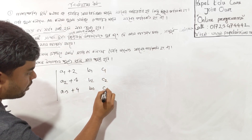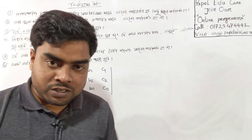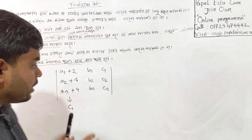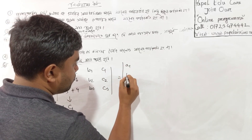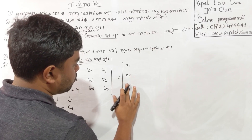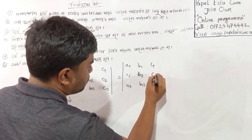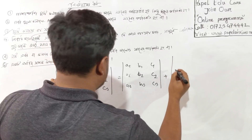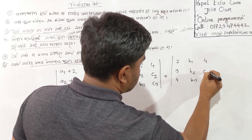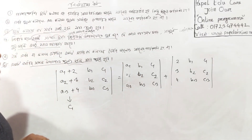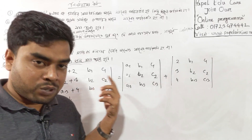This is the first column that we have to work with. I will write this statement: a1, b1, c1; a2, a3; b1, b2, b3; c1, c2, c3 plus 2, 3, 4; b1, b2, b3; c1, c2, c3.